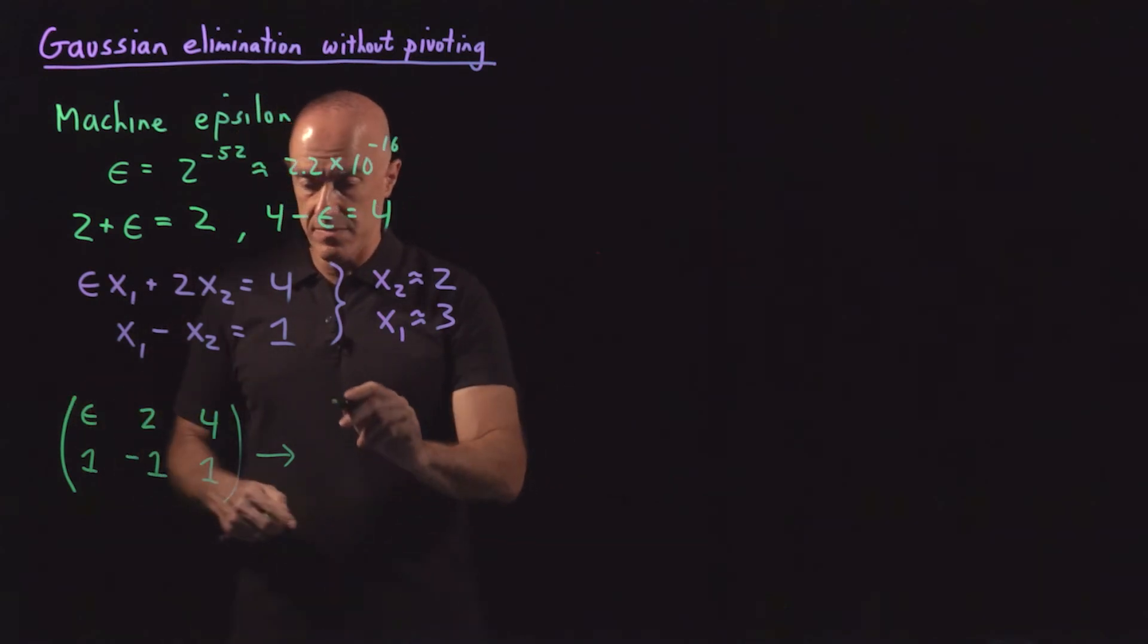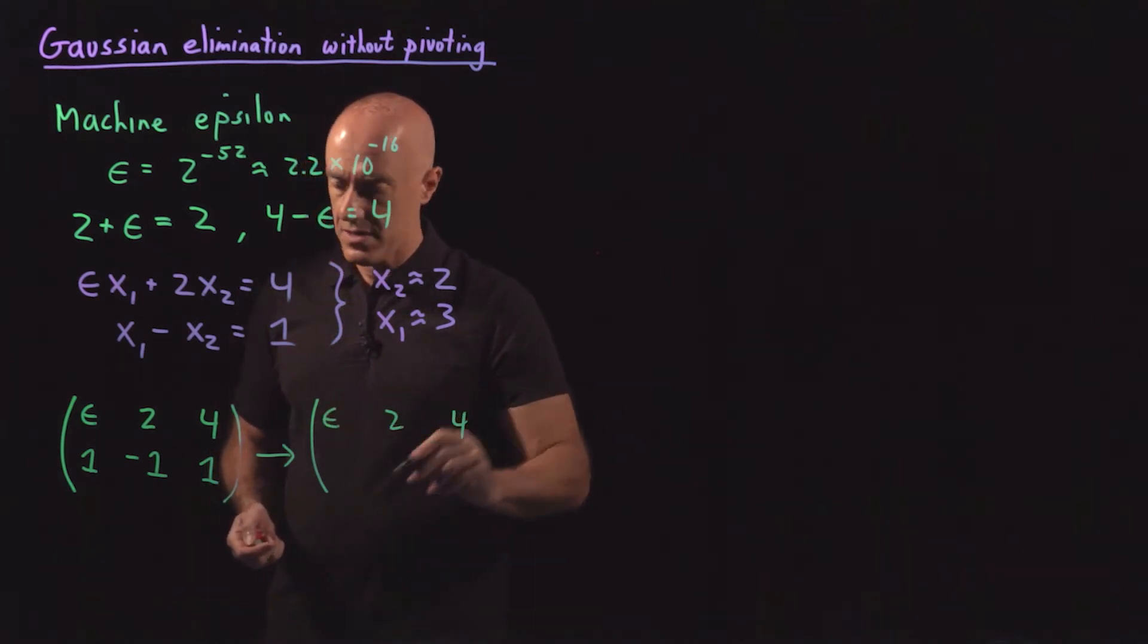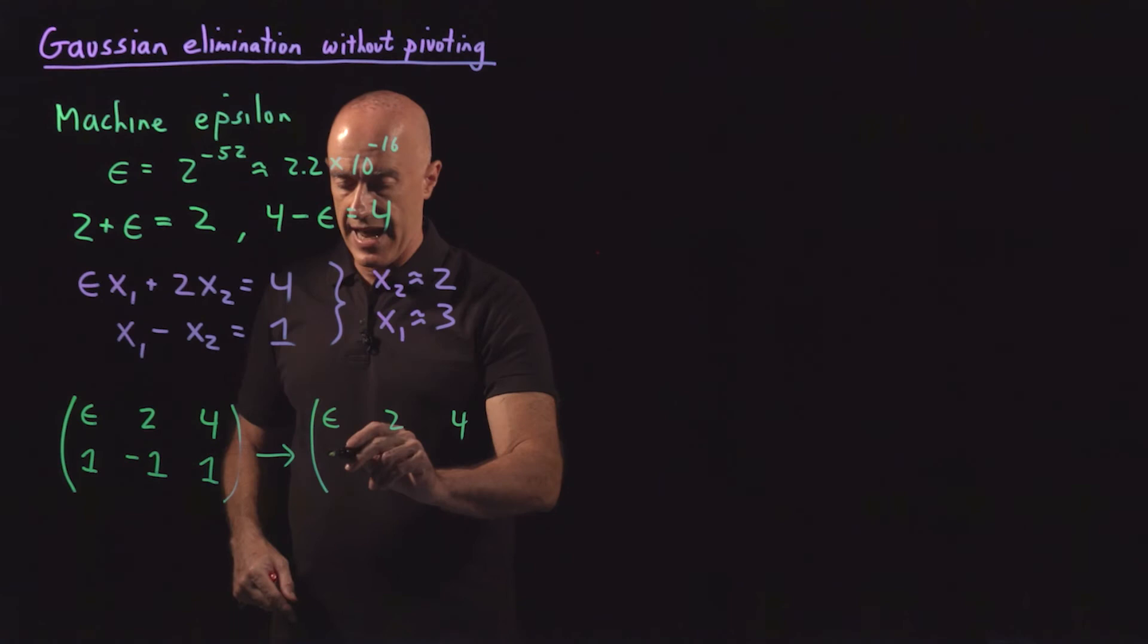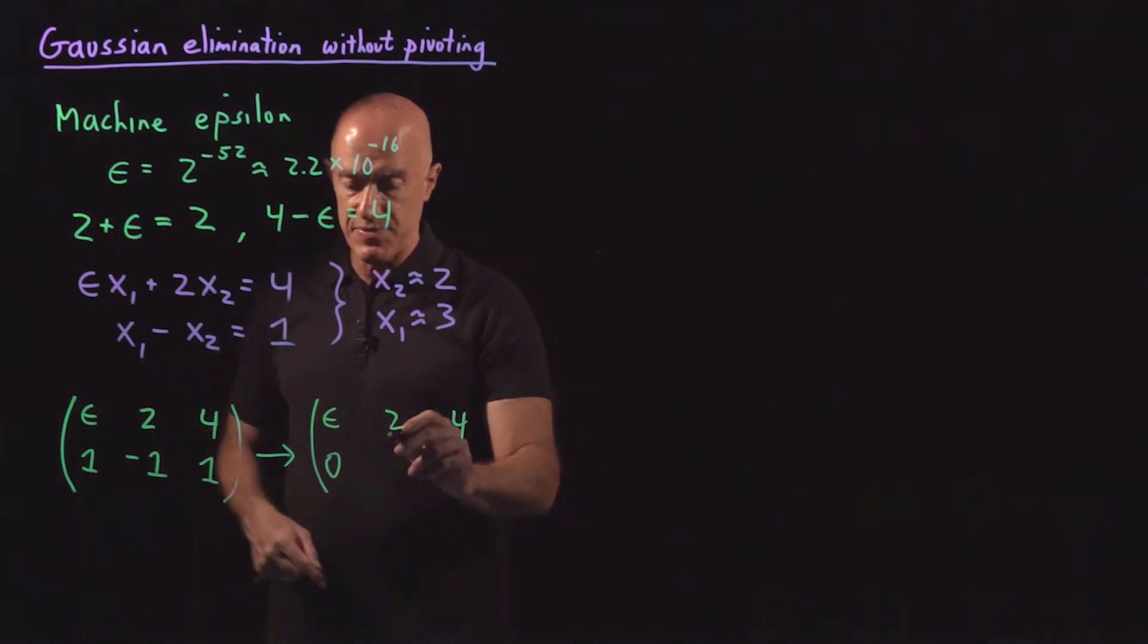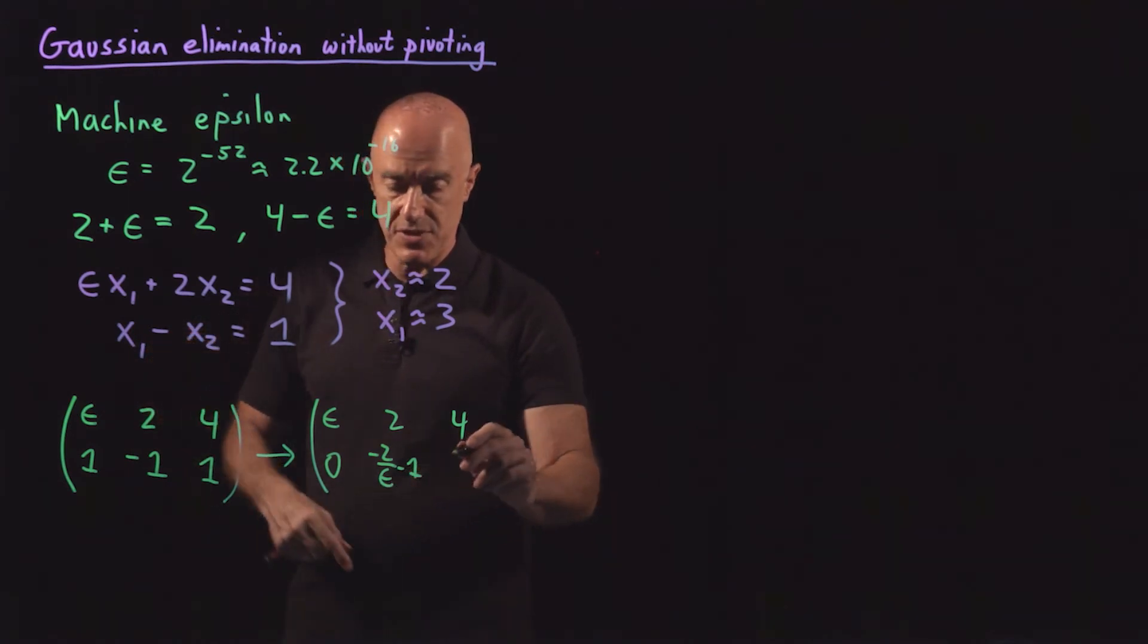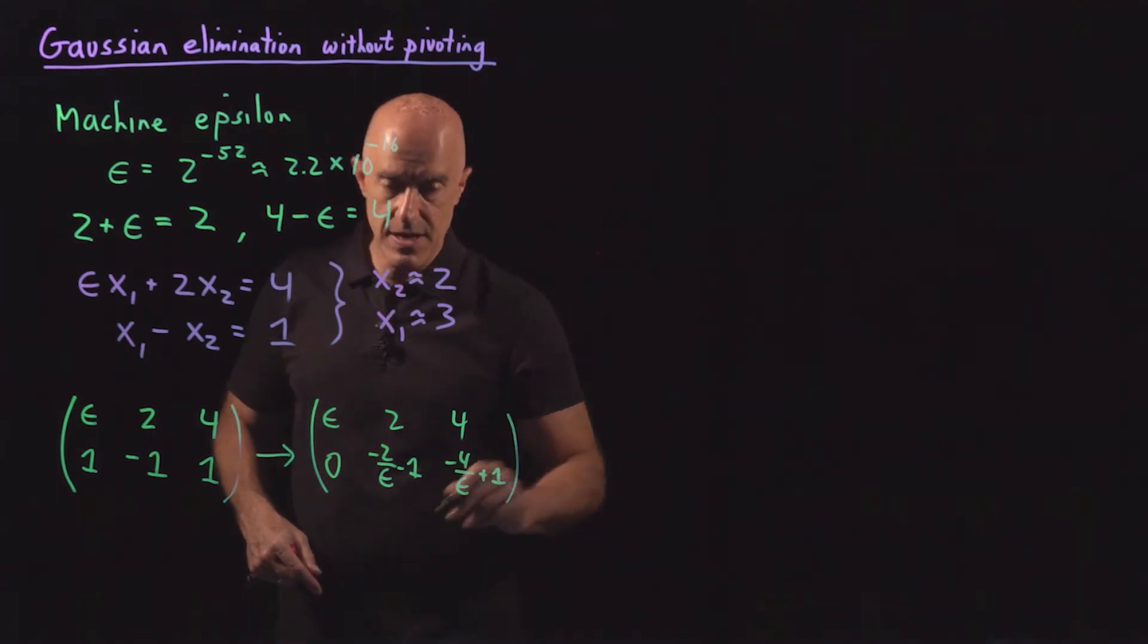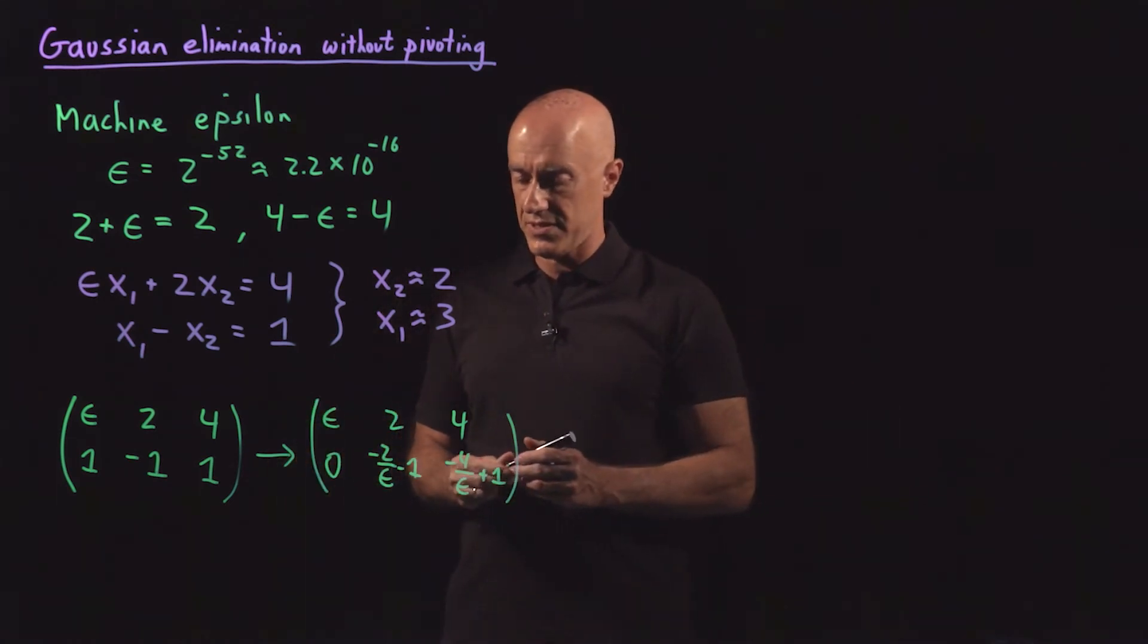Now we do Gaussian elimination. So the first row stays the same, epsilon 2, 4. Then we multiply by minus 1 over epsilon and add to eliminate this 1. So we have minus 2 over epsilon minus 1. And we have a minus 4 over epsilon plus 1. And that completes the Gaussian elimination for a 2 by 2 matrix.